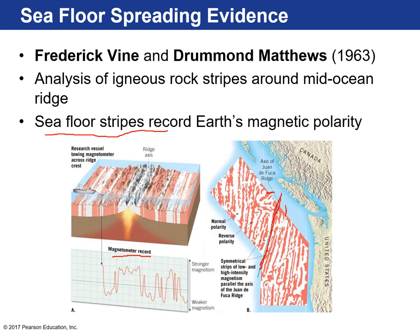What they found were these seafloor stripes. If you look at either side of the mid-ocean ridge, both sides are perfectly symmetrical. Here's the ridge axis where volcanism is occurring. New igneous rocks form and record the current magnetic conditions on Earth. As you move away from the ridge, there's a shift in the magnetic properties of the volcanic rocks, meaning there was a polarity reversal. On the other side, you see that same shift again — from normal to reverse polarity to normal to reverse on both sides.